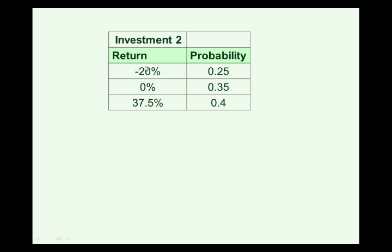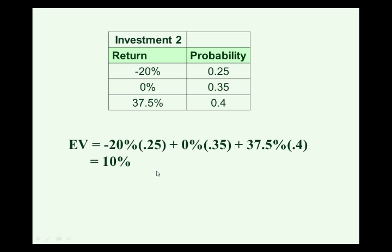Investment 2 has a slightly different return structure with slightly different probabilities. We calculate the expected return the same way: minus 20% at a probability of 0.25, a 0% return at a probability of 0.35, and a 37.5% return at a probability of 0.4. Again, we do the arithmetic and get an expected return of 10%.